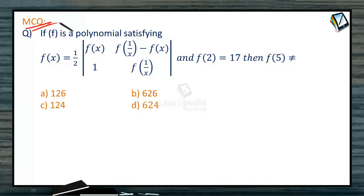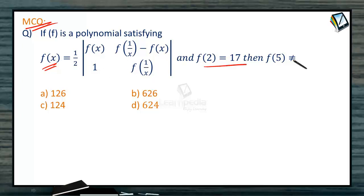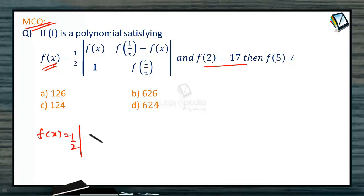MCQ: If f is a polynomial satisfying f of x equal to half into f of x, f of 1 by x minus f of x, 1 f of 1 by x, and f of 2 is 17, then f of 5 is not equal to what?